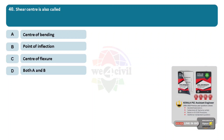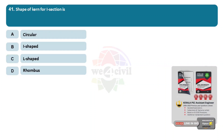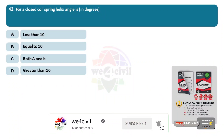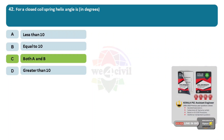Question 40: Shear center is also called? Options: A, center of bending. B, point of inflection. C, center of flexure. D, both A and B. Answer: Option C, center of flexure. Question 41: Shape of kern for an eye section is? Options: A, circular. B, eye shaped. C, L shaped. D, rhombus. Answer: Option D, rhombus. Question 42: For a closed coil spring, helix angle is? Options: A, less than 10 degrees. B, equal to 10 degrees. C, both A and B. D, greater than 10. Answer: Option C, both A and B.